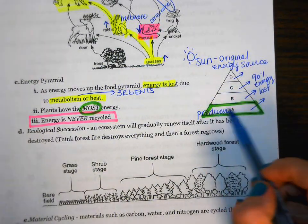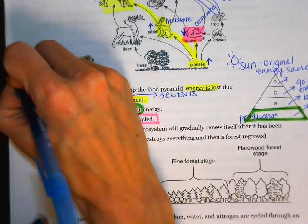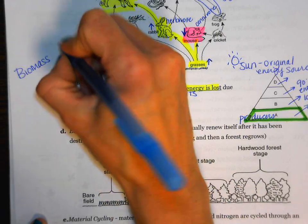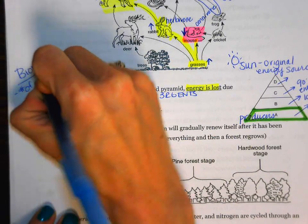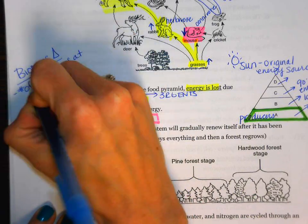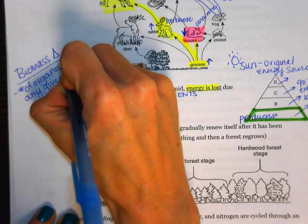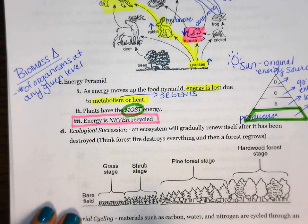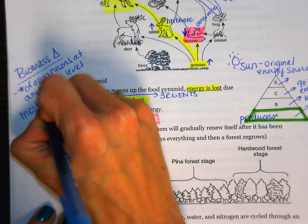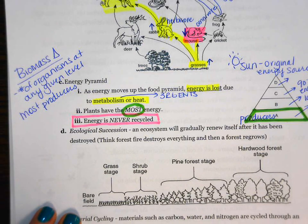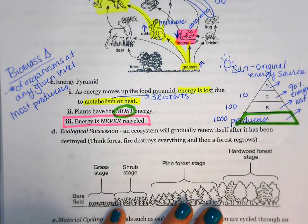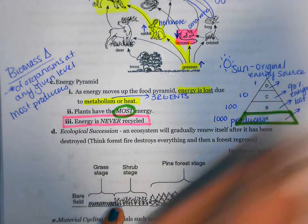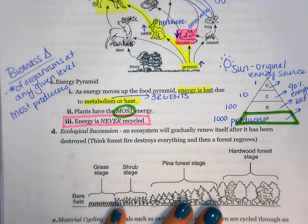Another related concept is the biomass pyramid. 'Bio' means living things and 'mass' refers to quantity or number — so a biomass pyramid shows the number of organisms at any given level. You always need to have the most producers for the ecosystem to remain stable. For example, a thousand producers could keep alive a hundred herbivores, those hundred herbivores could keep alive ten carnivores, and the top-level carnivore could only keep alive one. That's because so much energy is lost as you move up the energy pyramid.